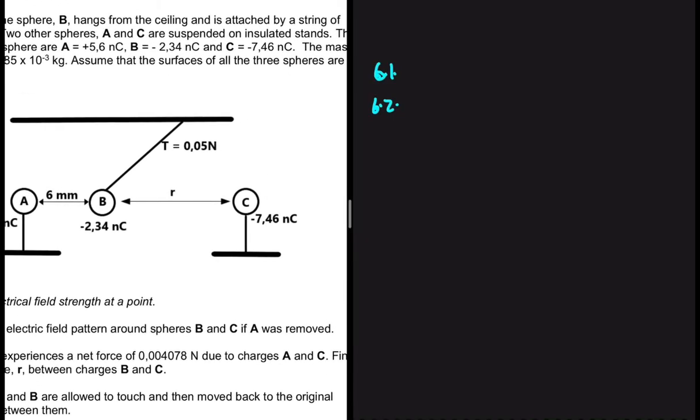So let's look at B and C only. So B is negatively charged as you can see, and C is also negatively charged. So what is going to happen to those two spheres? They are going to repel - like charges repel.